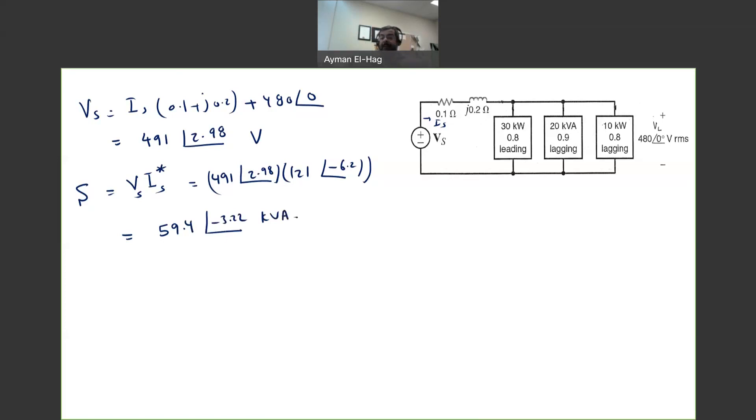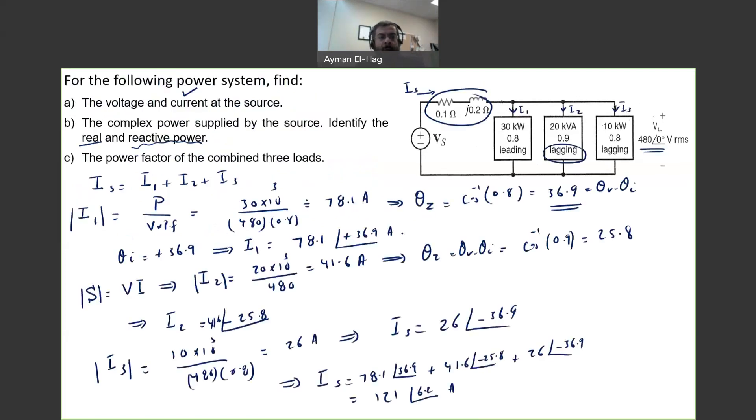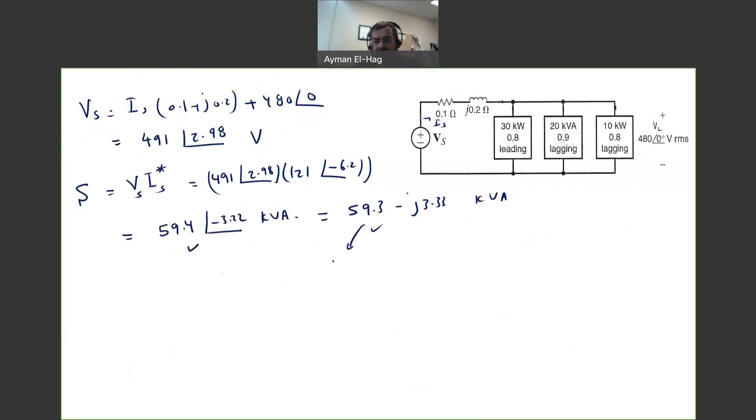So when you do the multiplications, you will find this is equal to 59.4, angle of minus 3.22, kVA. Now, this is in polar format. We need to convert this into rectangular format. And when we do so, this is equal to 59.3 minus j3.33. So this is your complex power, and this is your complex power. But we prefer it in this format. Why? Because of the second requirement in the same part B, which is identify the real and the reactive power. So this is your real power, 59.3 kilowatts. And this is your reactive power, 3.33 kVAR. So this is in kilowatts, and this is in kVAR. So now we know what's the real power and the reactive power.